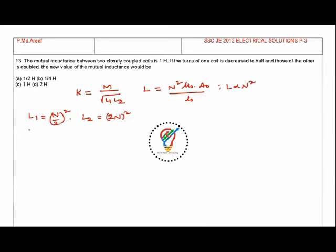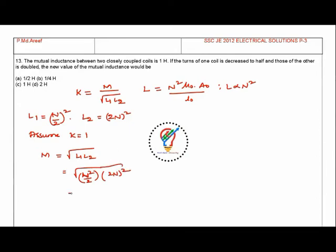Assuming a tightly coupled system, K equals 1, so M equals square root of L1 times L2. L1 is N squared over 4 and L2 is 4N squared, giving square root of (N squared over 4) times (4N squared) = N squared = 1 Henry. So the mutual inductance remains 1 Henry — it does not change when you increase one coil's turns and decrease the other by the same ratio.